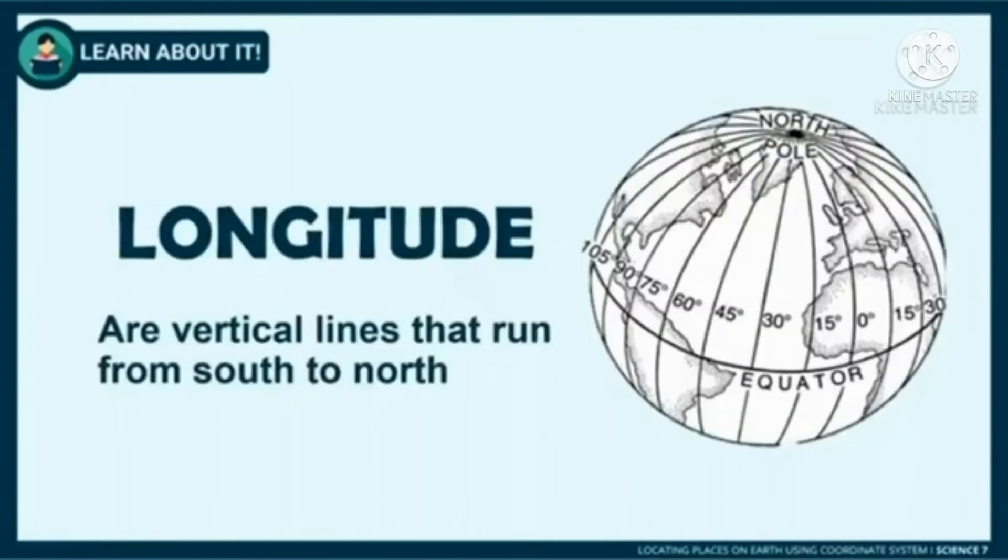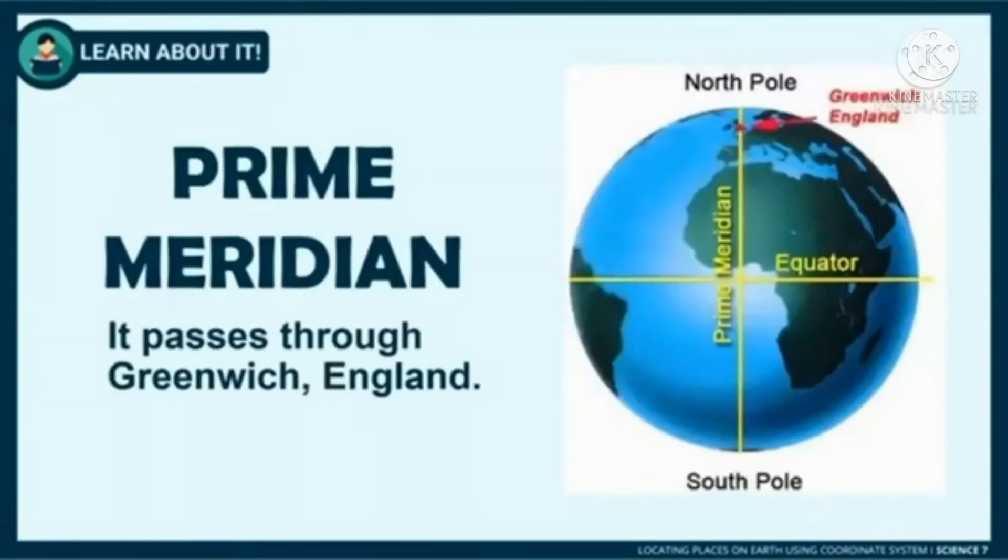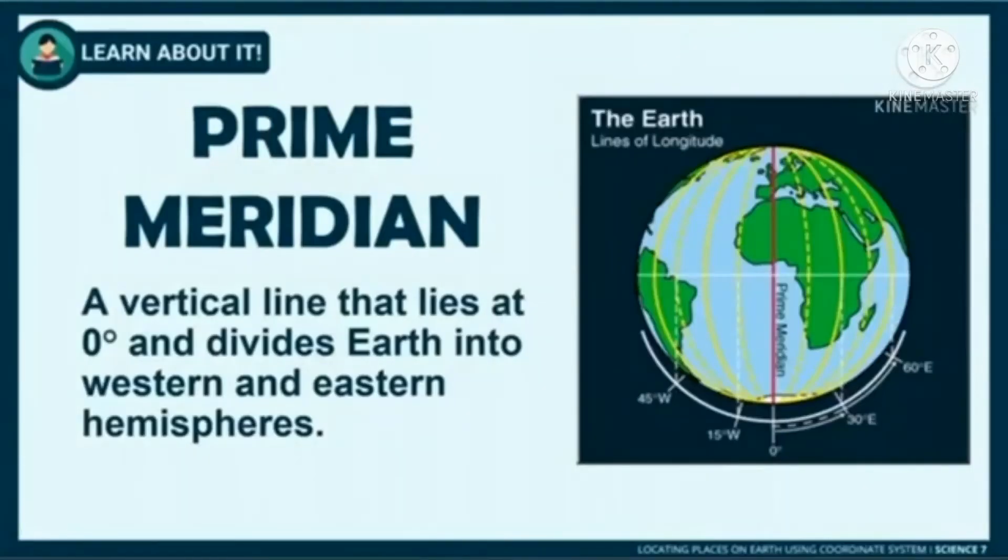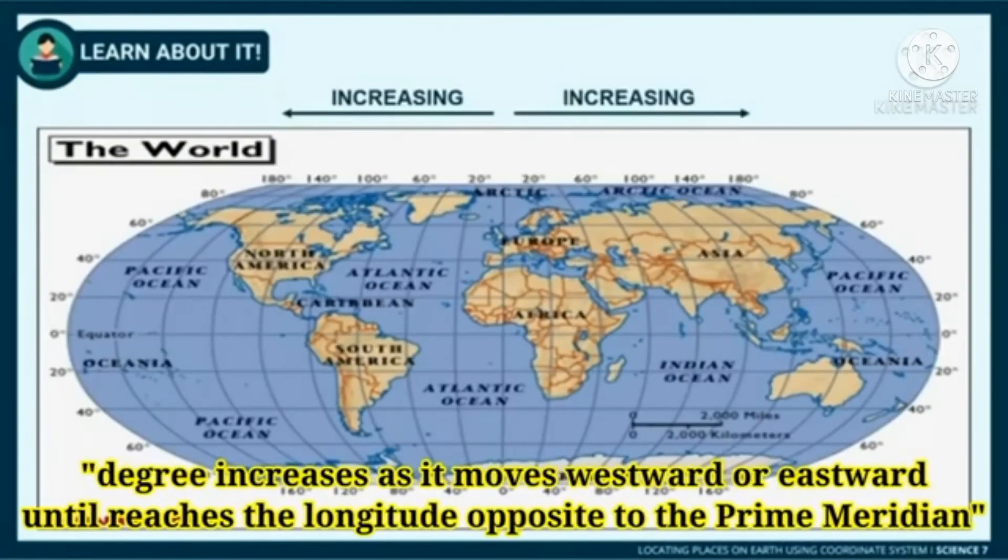Lines that run from north to south are called longitudes. The longitude which passes through Greenwich, England is called the prime meridian. The prime meridian divides the western and eastern hemisphere of the world. As a reference point, the prime meridian is read as zero degree longitude. The degree increases as it moves westward or eastward until it reaches the longitude opposite to the prime meridian, which is what we call the anti-meridian.